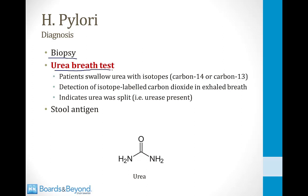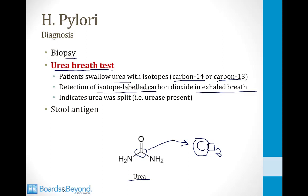Another diagnostic approach is the urea breath test. The patient swallows urea labeled with an isotope of carbon — either carbon-14 or carbon-13. If H. pylori's urease splits the urea, labeled CO2 is exhaled and detected in the breath, confirming the presence of urease and therefore H. pylori. A third method is the stool antigen test, which is the most commonly used clinical approach and is easy to perform with a stool sample.